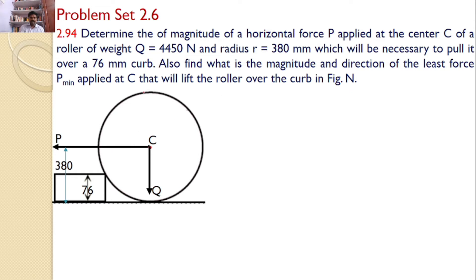There is a roller rested against the curb. I would like to make the roller roll above this curb by applying a force P. So how much horizontal force is required to make the roller roll over the curb, that is the problem. This is the radius, the radius is given as 380 mm, height of the curb is given as 76 mm.